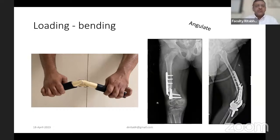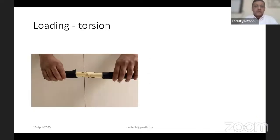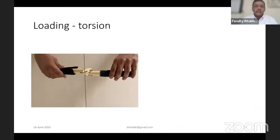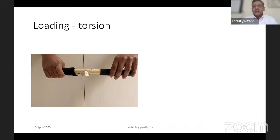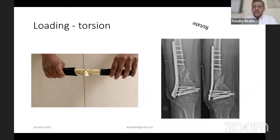The third load is torsion. Torsion forces, as the word implies, tend to twist the fracture — fracture fragments twist on loading. These tend to cause rotatory displacements, which are better appreciated clinically. In the radiograph, proximally the plate and screws are visible in profile, but distally the distal femur and proximal tibia seem to have rotated out of place.